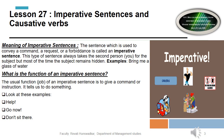Examples of imperative sentences include: 'help,' 'go now,' 'don't sit here.' From these we get to know whether the person is giving an order, advice, request, conveyance, or instructions.